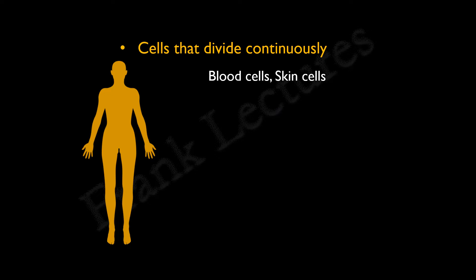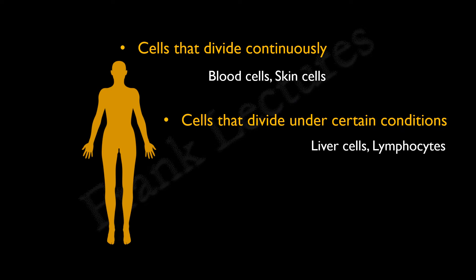Another category is of the cells that do not normally divide, but they may begin to divide under certain conditions. For example, liver cells and lymphocytes. If there is a wound or damage in liver, the remaining liver cells divide to repair it. We have also seen in the immunology lecture series that when lymphocytes come in contact with a foreign antigen, they begin to proliferate and induce an immune response.